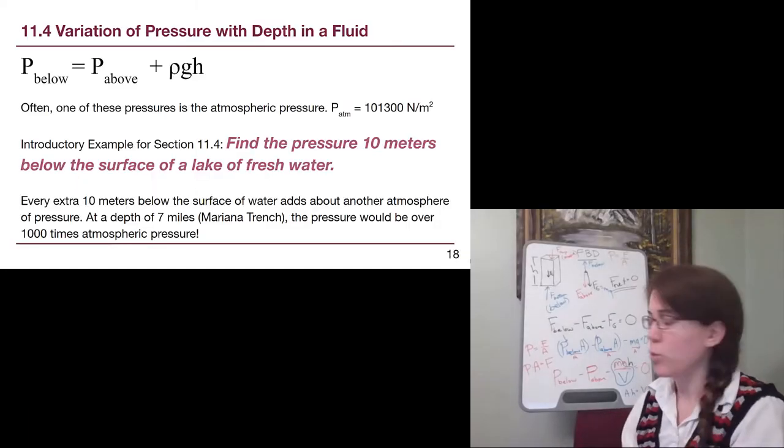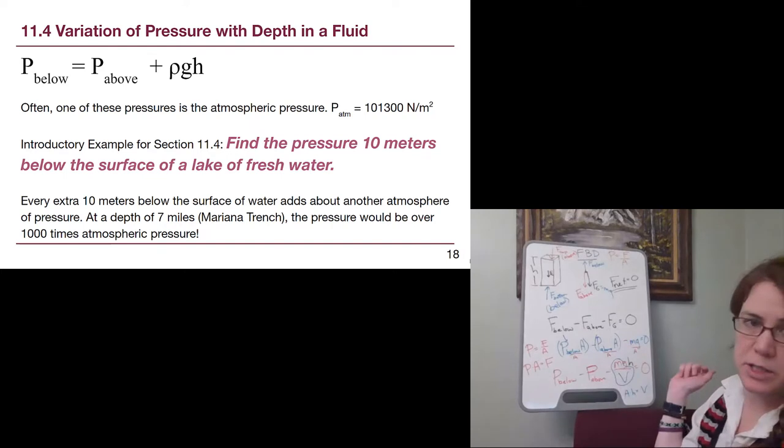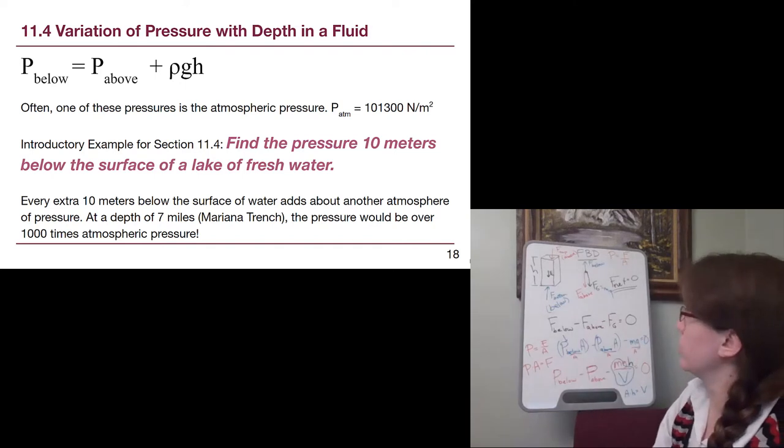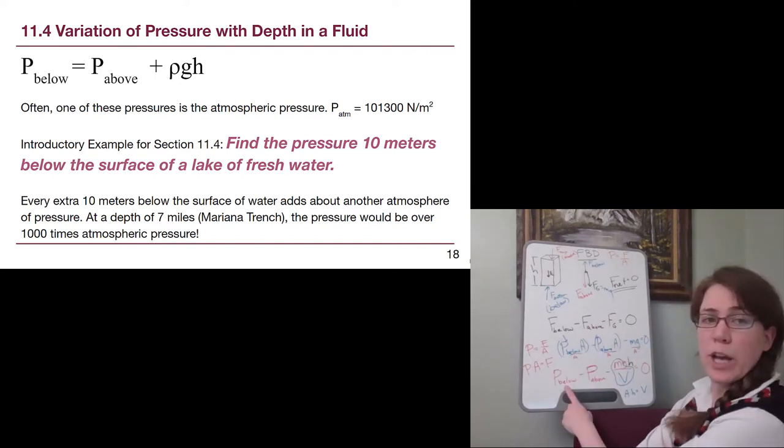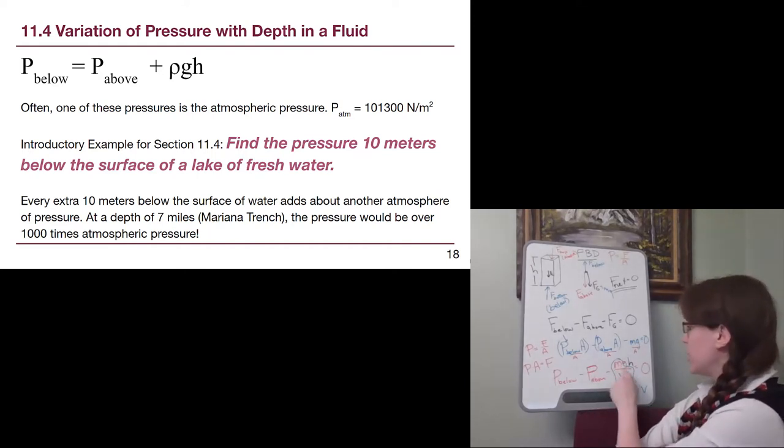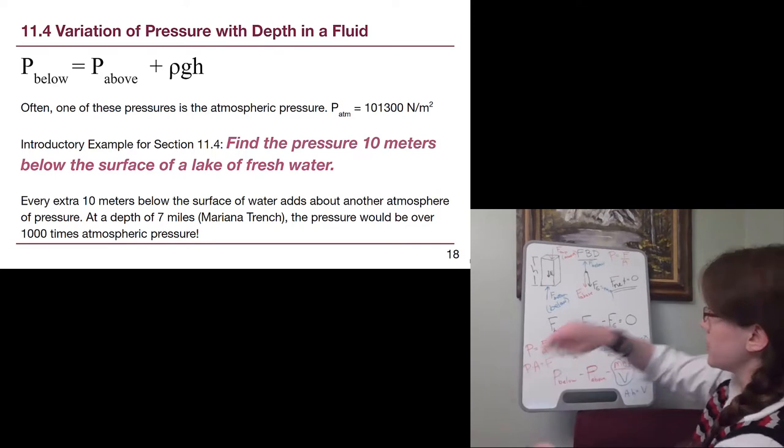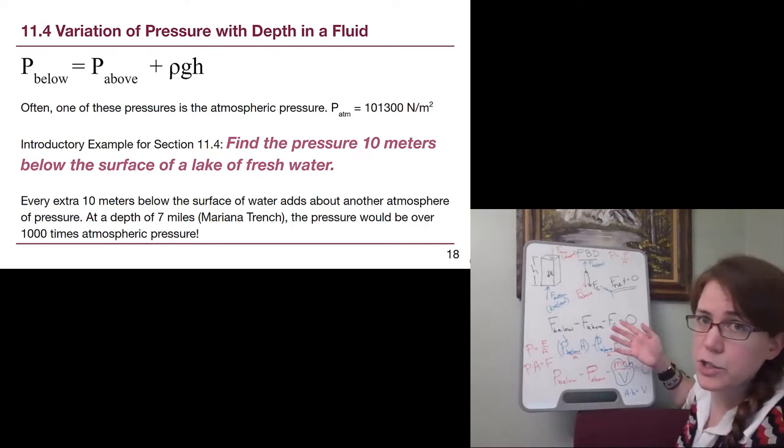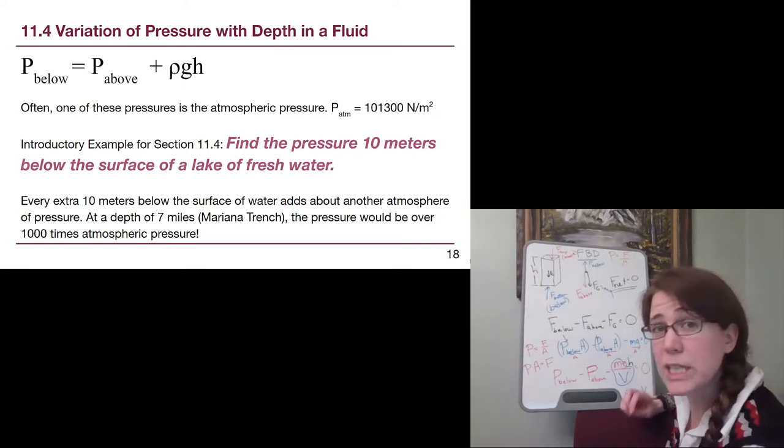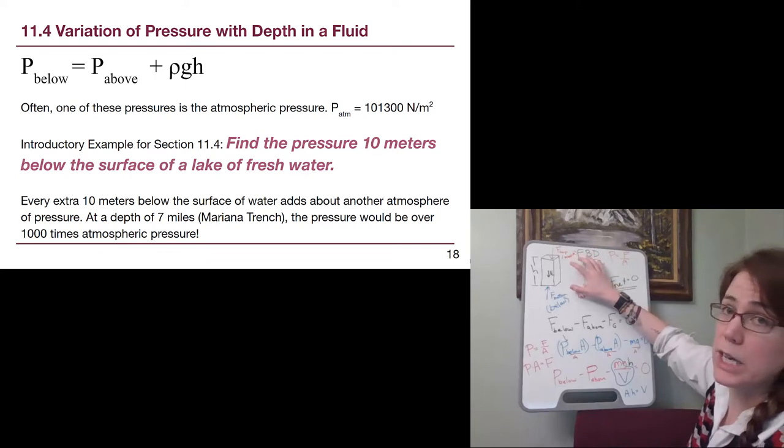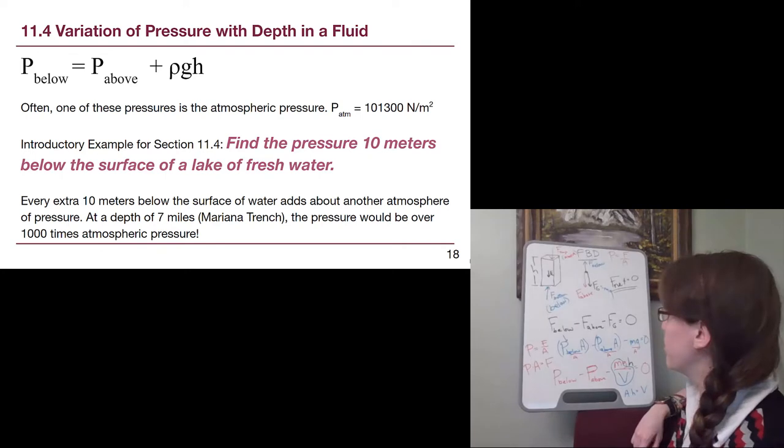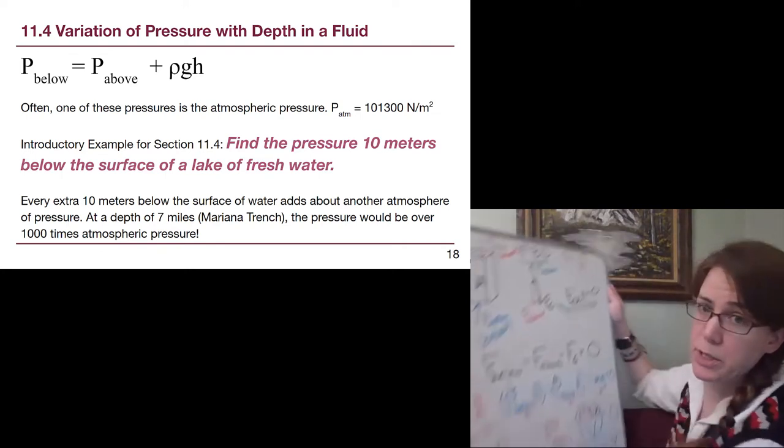So what we end up with is pressure below equals pressure above plus rho times g times h. Now we never have to redo this derivation ourselves, but it is worth making sure we have a sense that it is really just coming from the forces acting on a fluid equaling zero. That's true of static problems. Fluid statics is all of chapter 11.